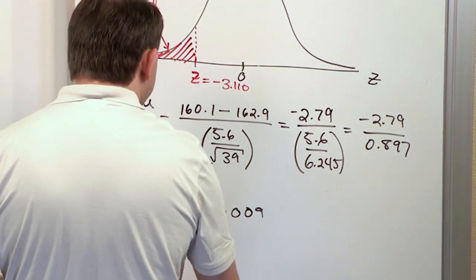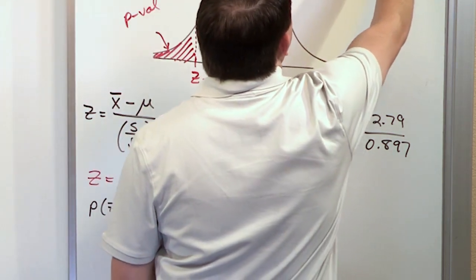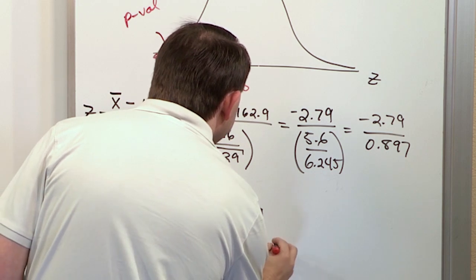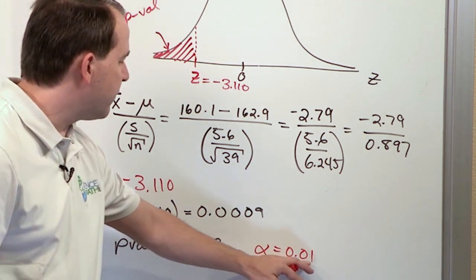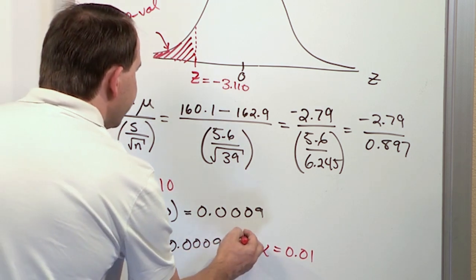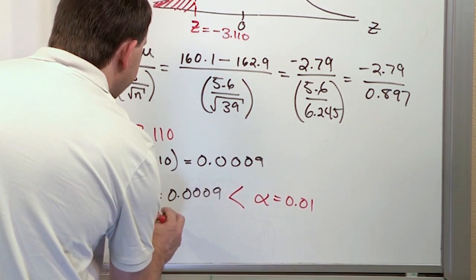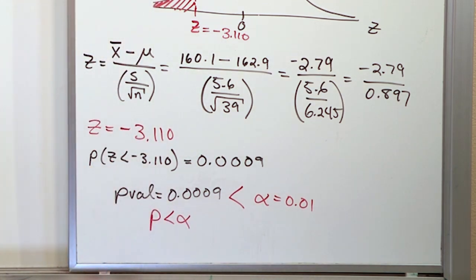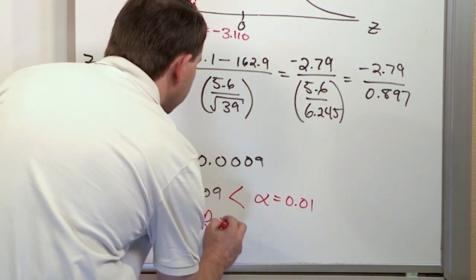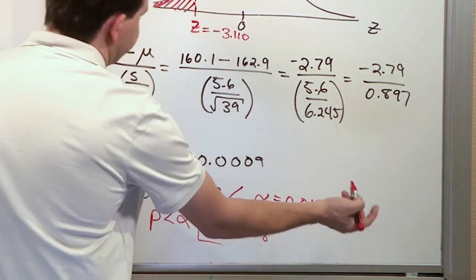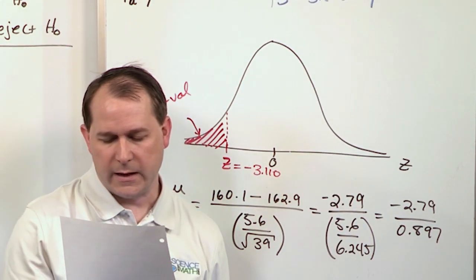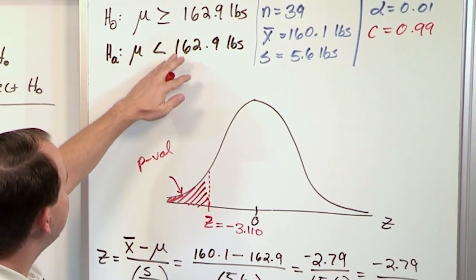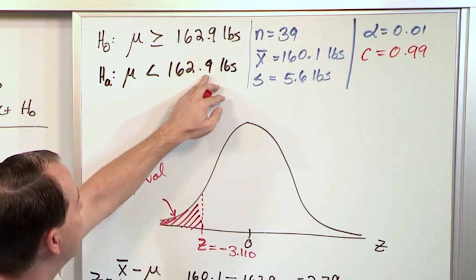And what we do is we compare this to the level of significance for our problem. 99% level of confidence, 0.01 level of significance. Which one of these numbers is smaller? Well, this one has more zeros after the decimal point before the number. This guy is smaller. So what we conclude is that p is less than alpha. We reject the null hypothesis. So we say reject the null hypothesis at this level of significance, of course. So the evidence is strong at a 99% level of confidence to say that because we can reject this to say that the average weight of males is actually less than 162.9 pounds.